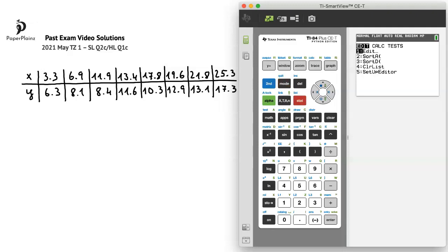If you press STAT and EDIT, you'll see that we still have our x and y-values that we entered in question part A. Therefore, all we have to do is go back to STAT, go over to CALC, and choose two-variable statistics.